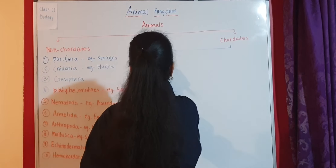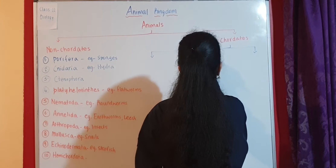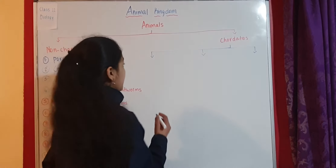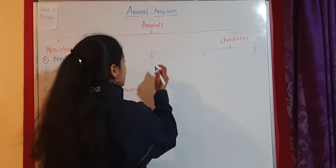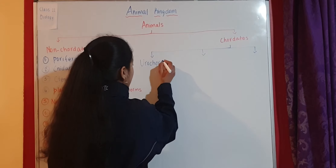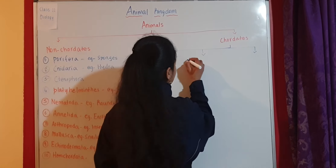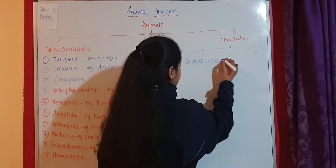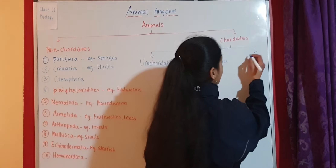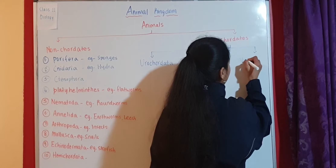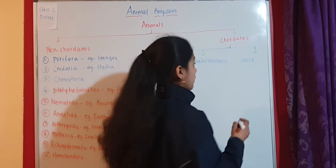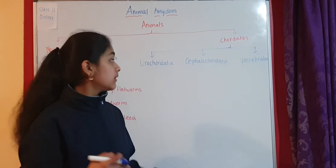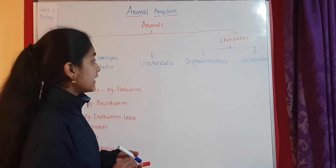Chordates can be classified into three groups on the basis of where the notochord is located. If the notochord is in the tail region, they are called Urochordata. If it is from head to tail region, these are called Cephalochordata. The third group is Vertebrata — in vertebrata, the notochord completely turns into the vertebral column. So chordates are divided into Urochordata, Cephalochordata, and Vertebrata.